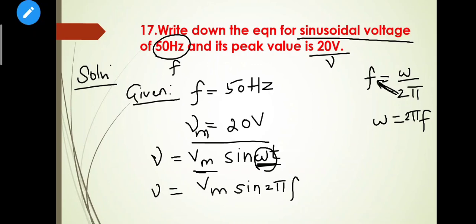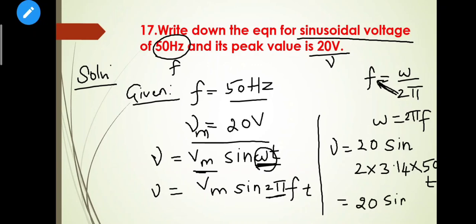So v = Vm sin(2πft). Substituting the values: v = 20 sin(2π × 50 × t). Since 2π = 2 × 3.14, this gives v = 20 sin(314t). This is the answer.